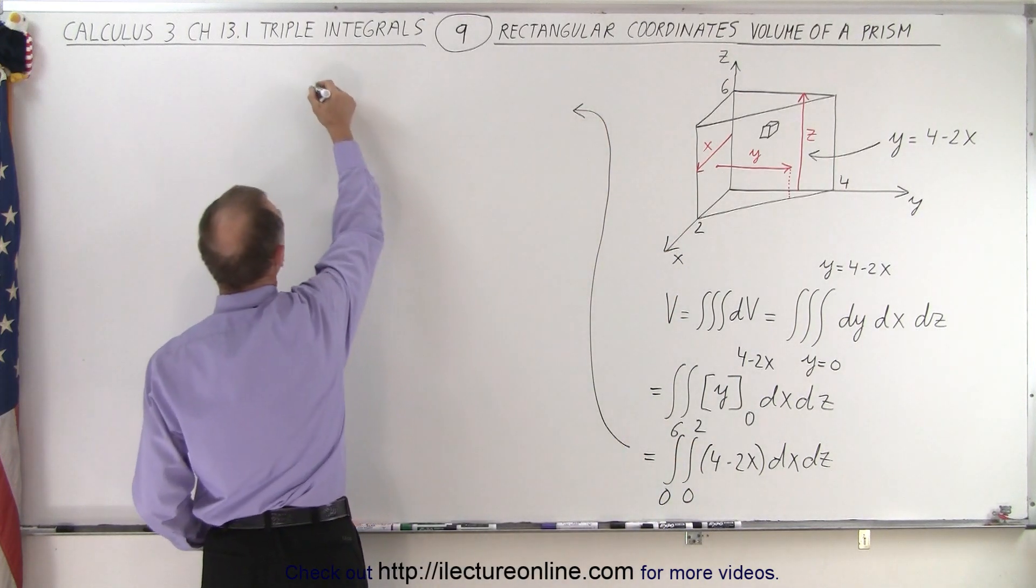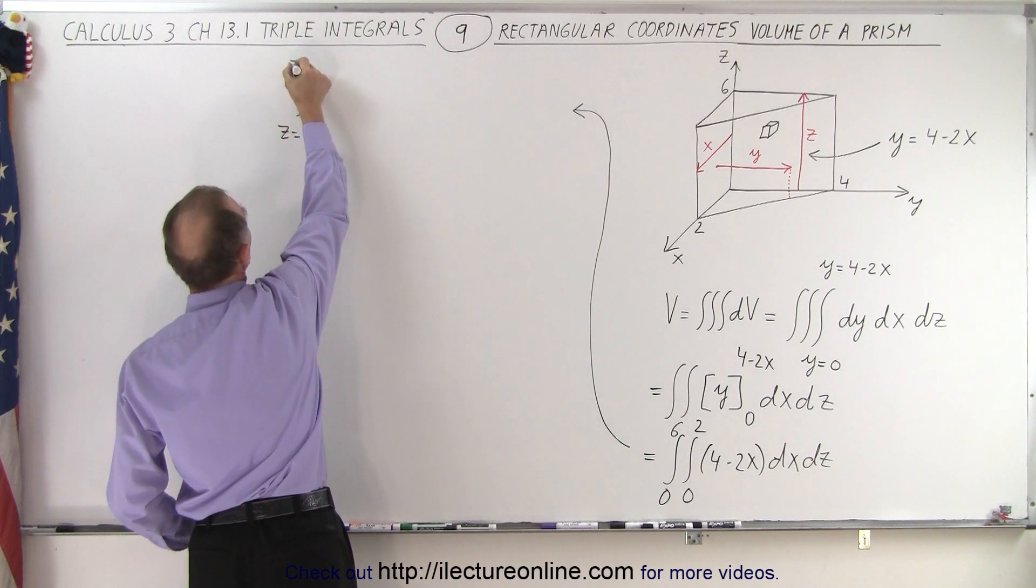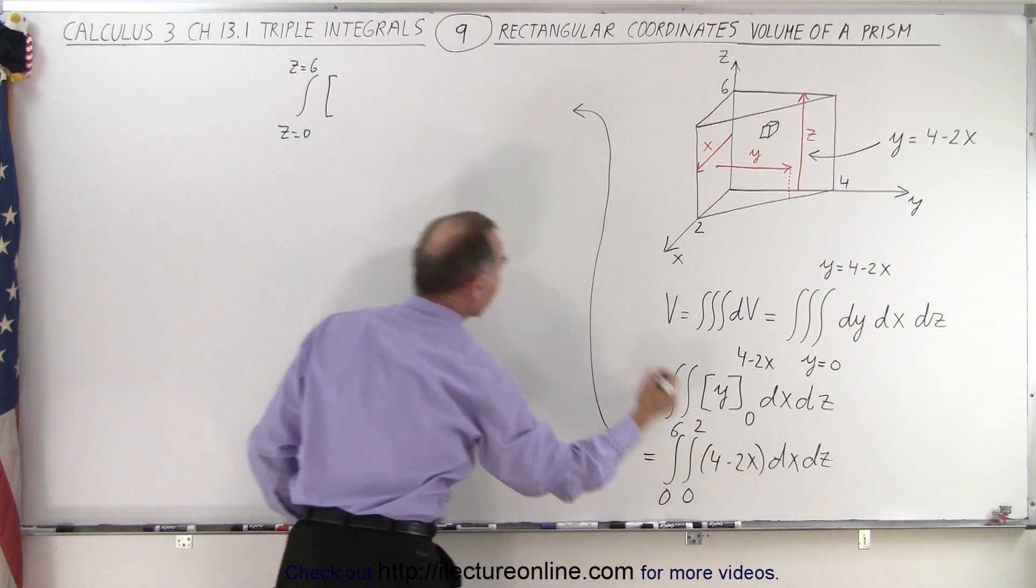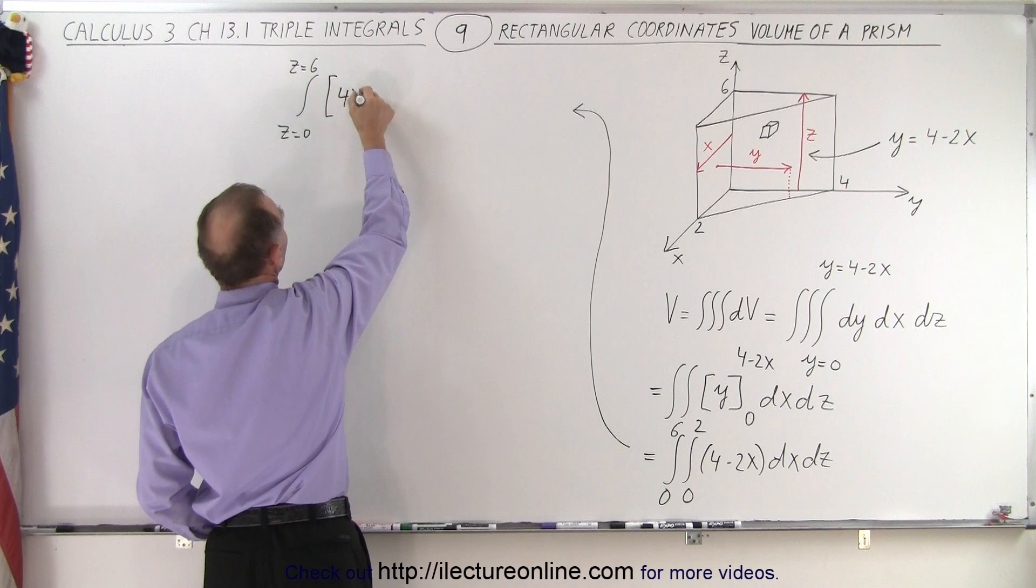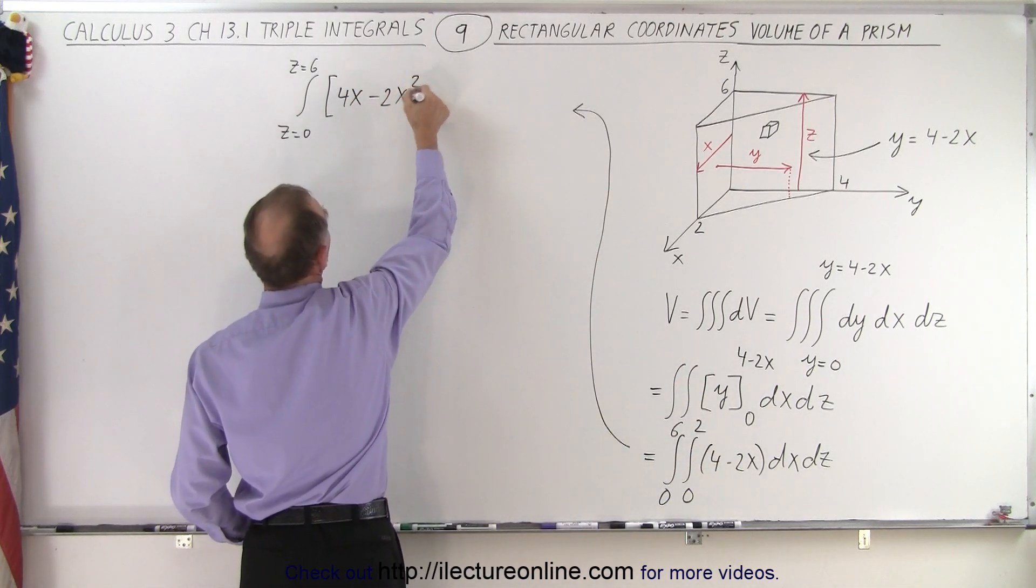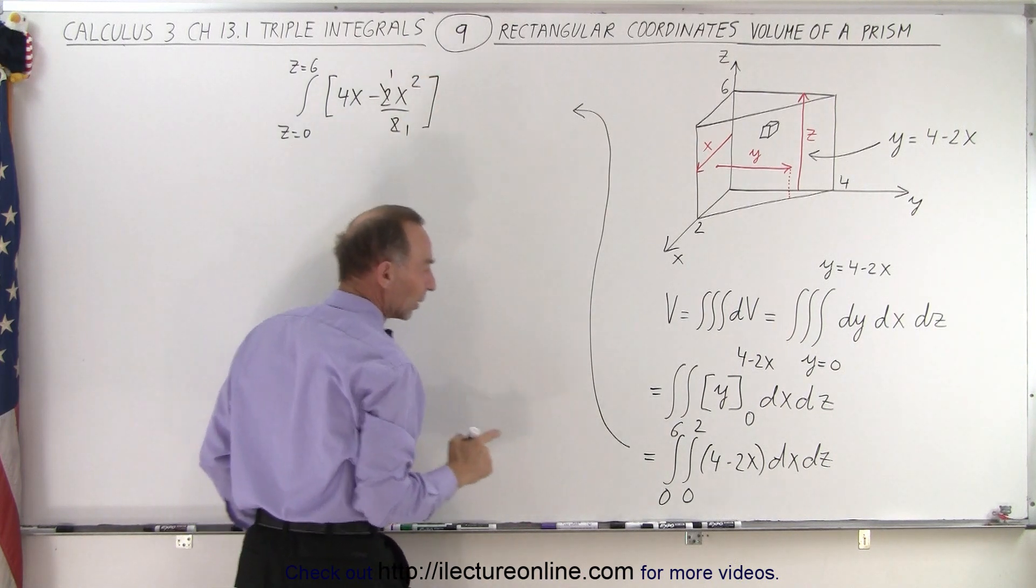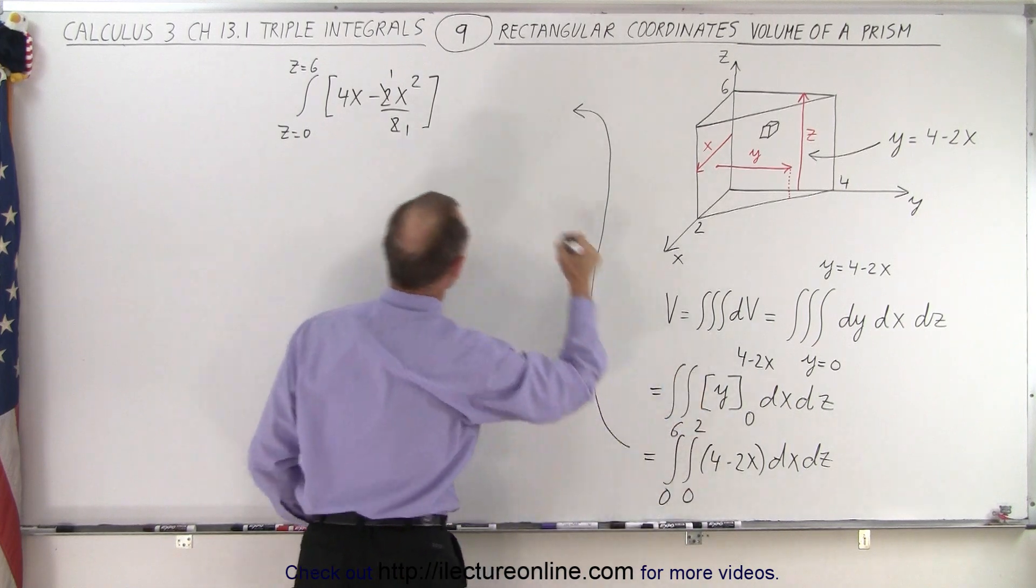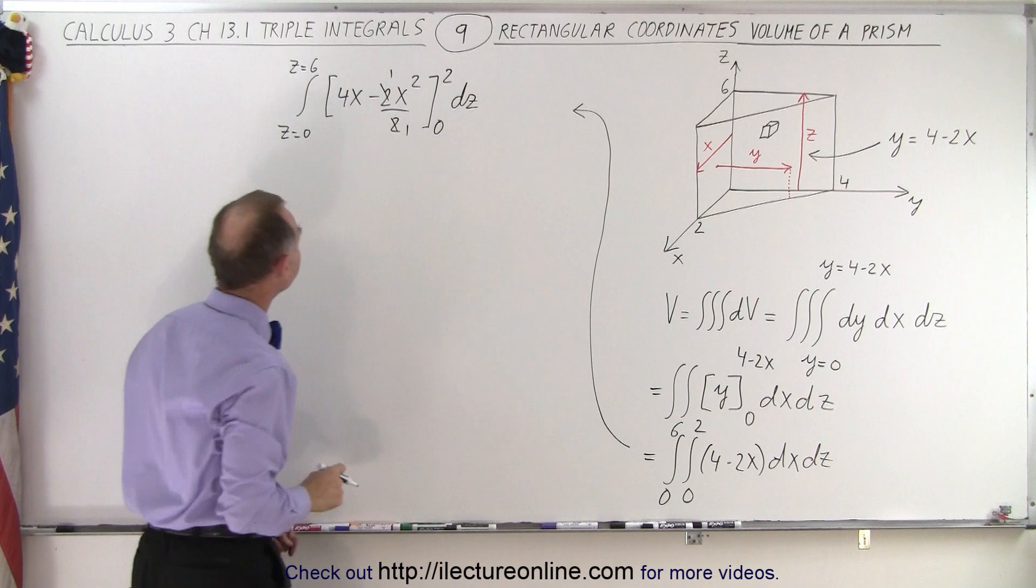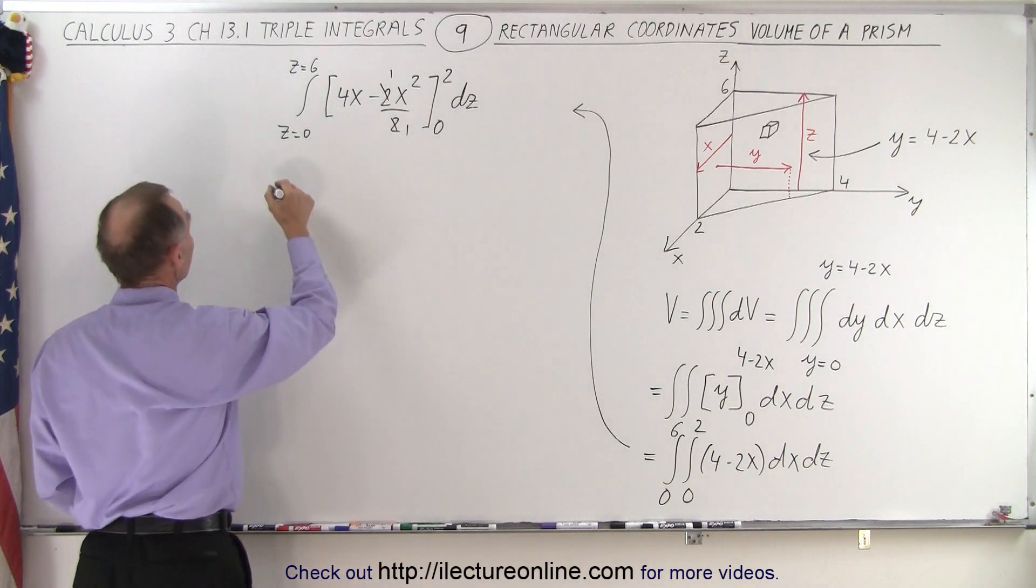And that means that we now have one single integral left with z equals 0 to z equals 6. And then here, when we have 4 dx integrated, that becomes 4x. And minus we have 2x, well that becomes 2x squared divided by 2. And of course the 2's cancel out. And we're going to integrate that from 0 to 2, and we still have our dz. All right, when plugging the lower limit again we get nothing. Plug in the upper limit, we get the following.